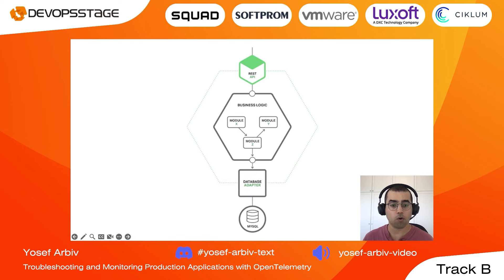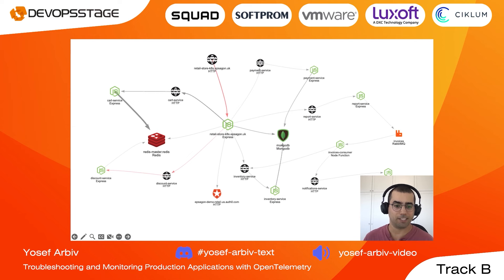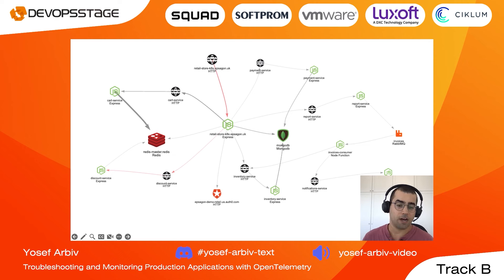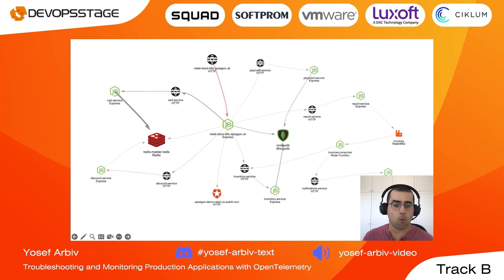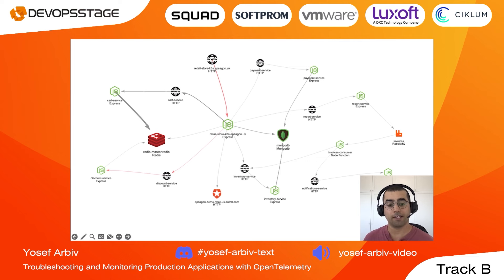This becomes even more complex when talking about a distributed system. This is another simple application, but now using AWS architecture with many different microservices talking to each other. It is much more complex to understand what our system is, what services make our system, and what the different states our system can be in. This is the first challenge that observability can help us with.